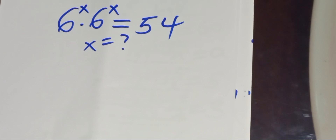Hello everyone. Let's present a solution given this nice exponential equation, which is 6 to the power x multiplied by 6 to the power x, and this is equal to 54. So what is the value of x?